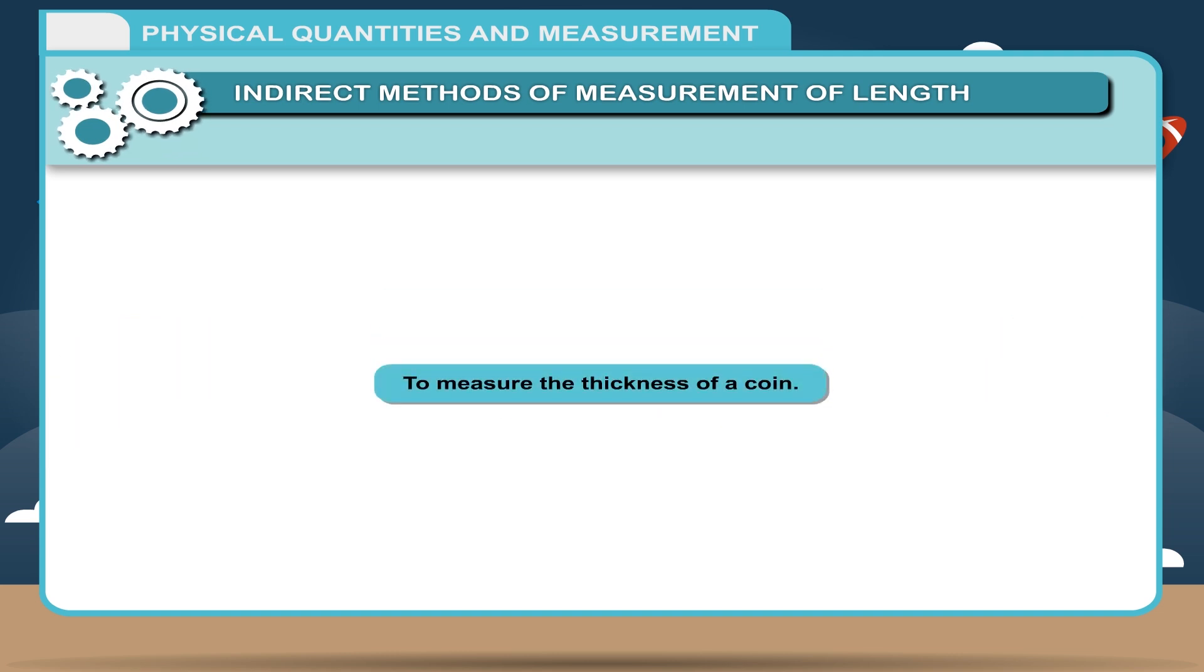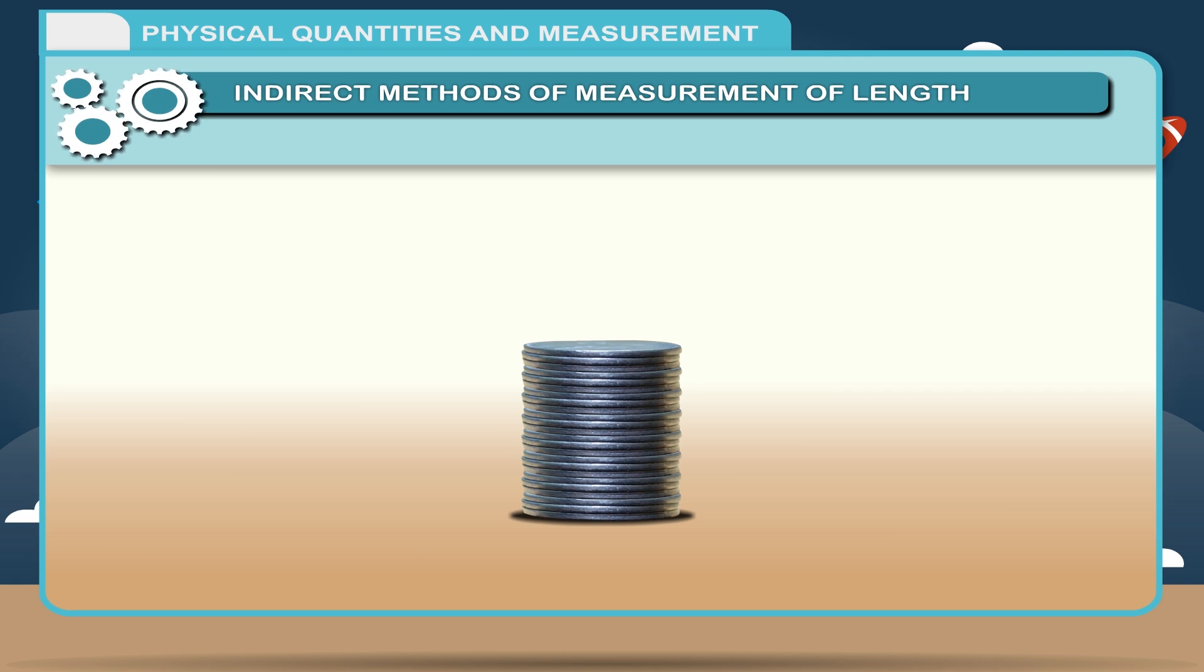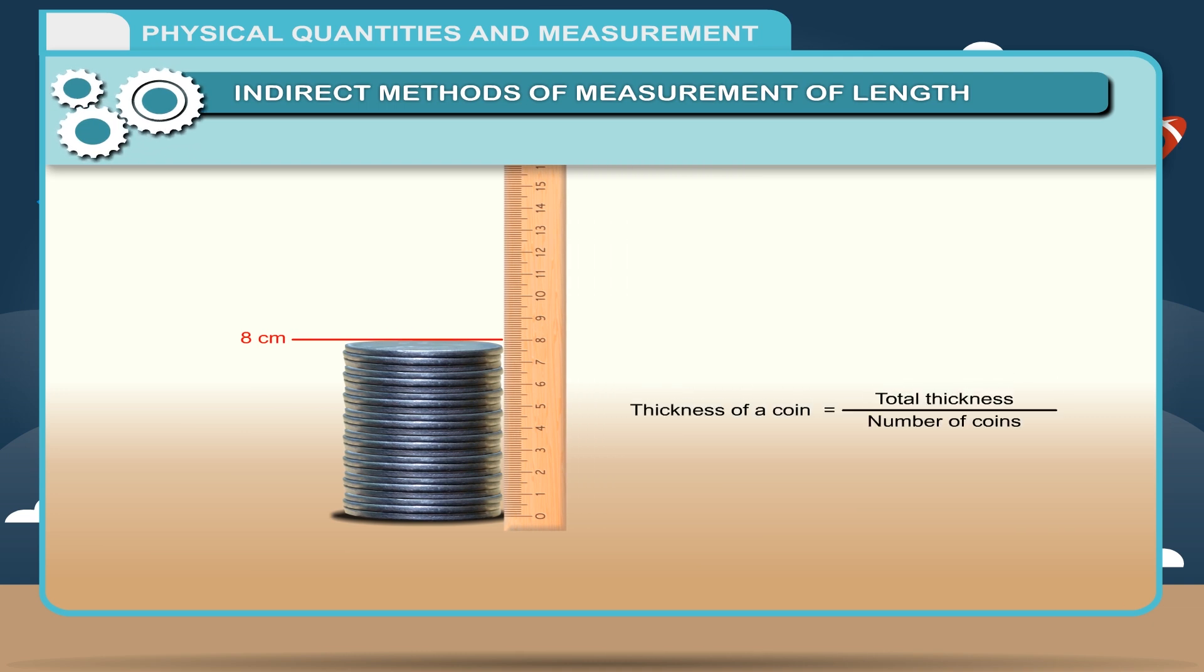Activity: To measure the thickness of a coin. Take some identical coins, say 20 to 25 in number, and place them one over the other. All these coins will make a cylindrical column. The height of this stack of coins can easily be measured by a ruler placed vertically against it. To find the thickness of a single coin, divide the total thickness by the number of the coins. So, thickness of a coin equals total thickness divided by number of coins.